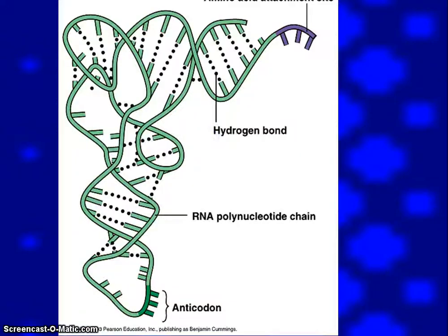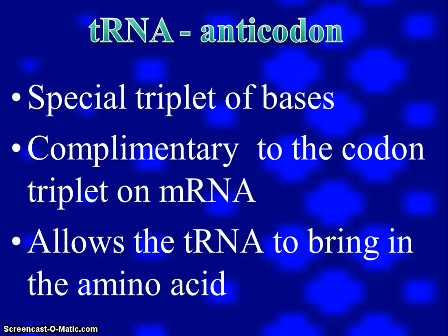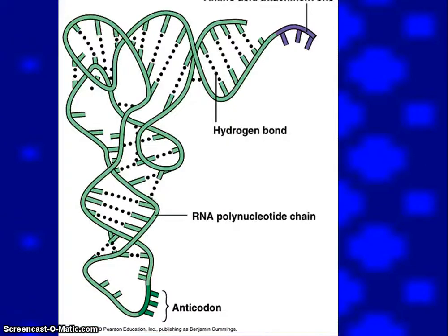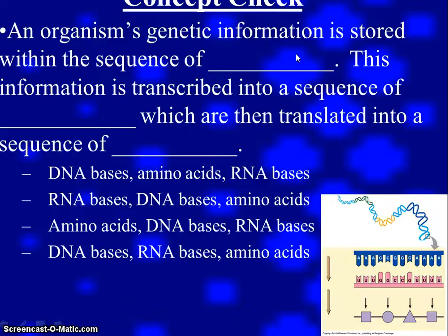One more thing to talk about is the anticodon. On the tRNA are a special triplet of bases — three bases — that are going to be complementary to the mRNA. That's going to allow a temporary attachment so that the amino acid can be held in place. The anticodon would be right in this region to allow for attachment.